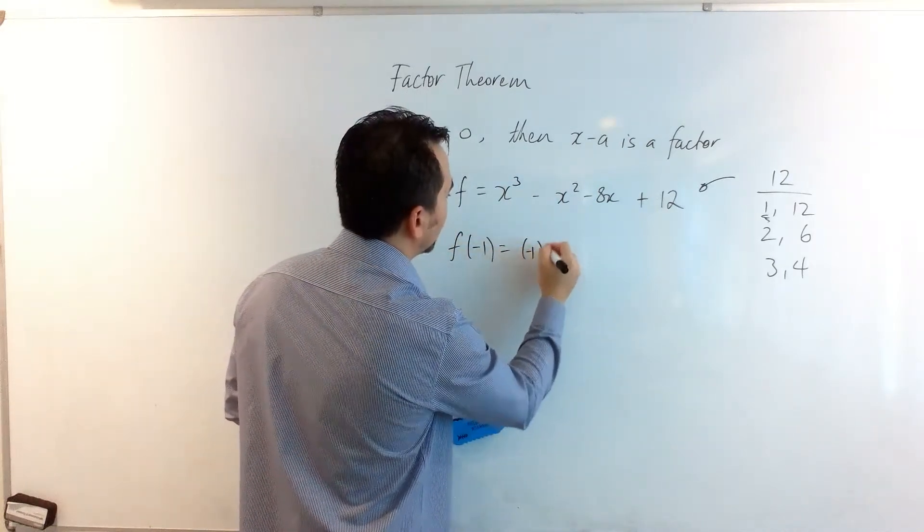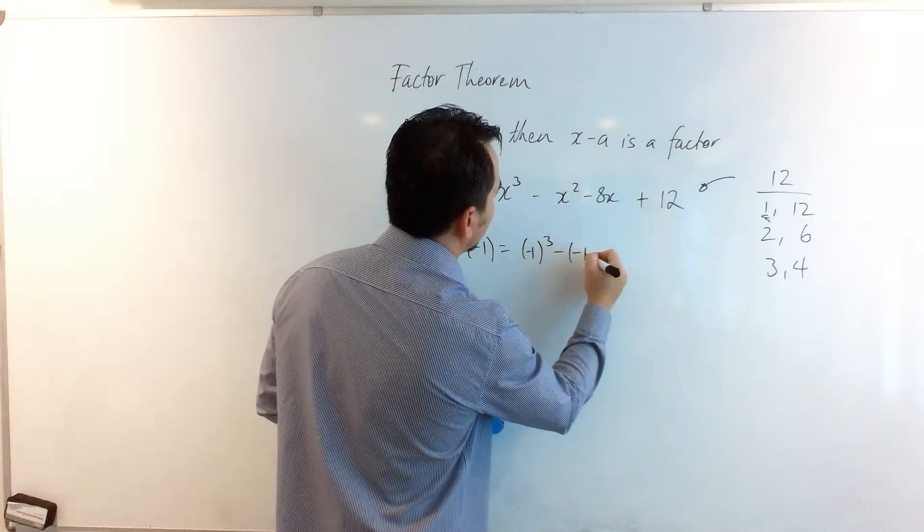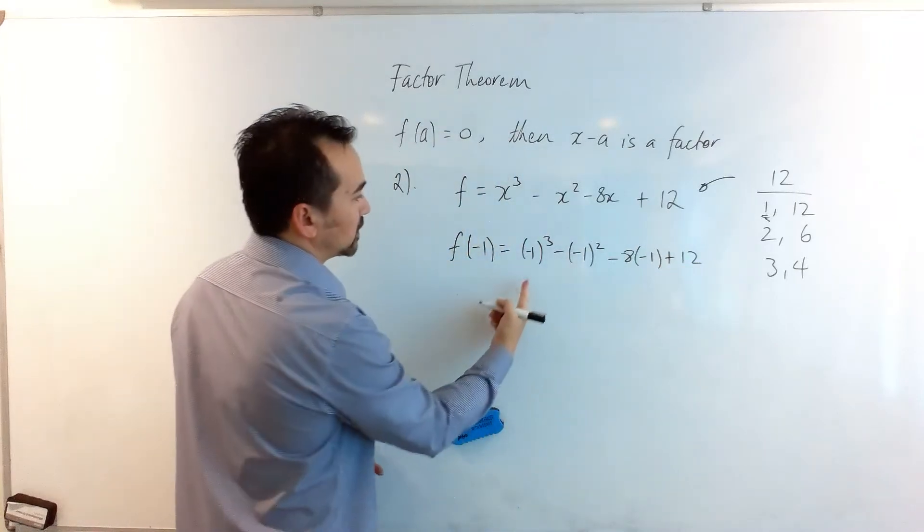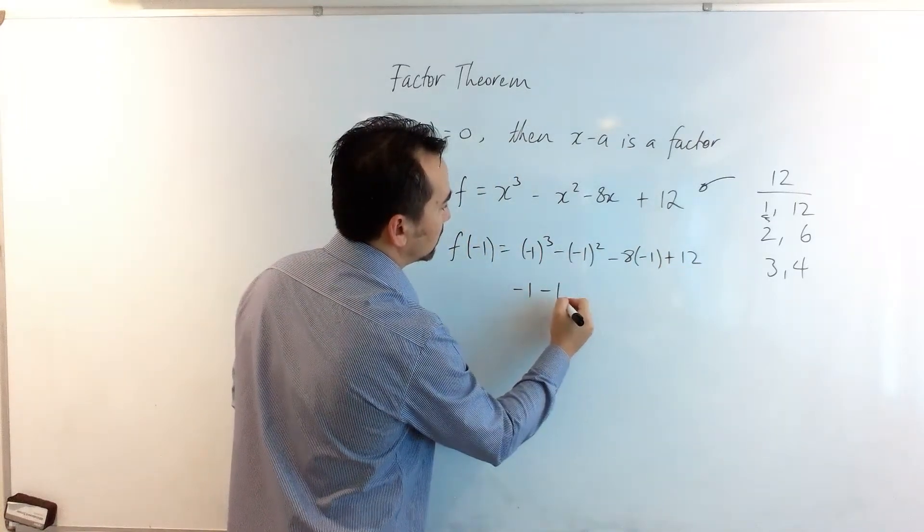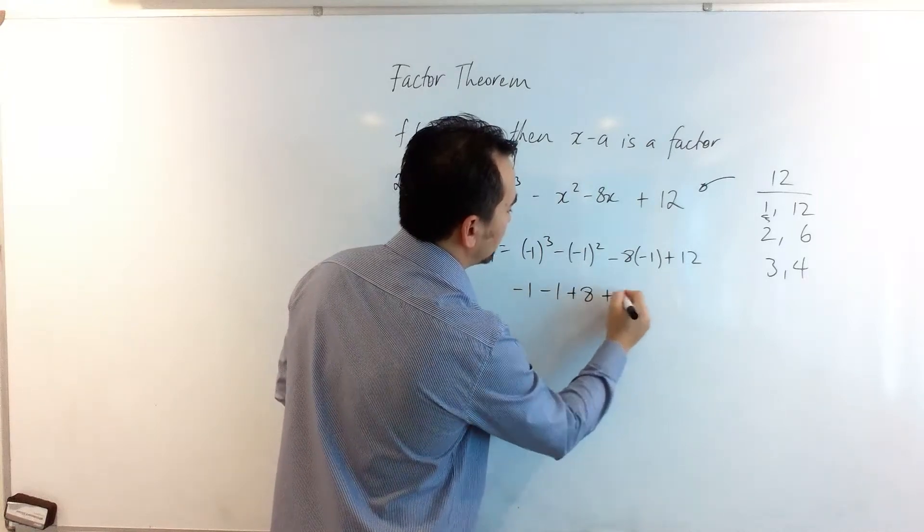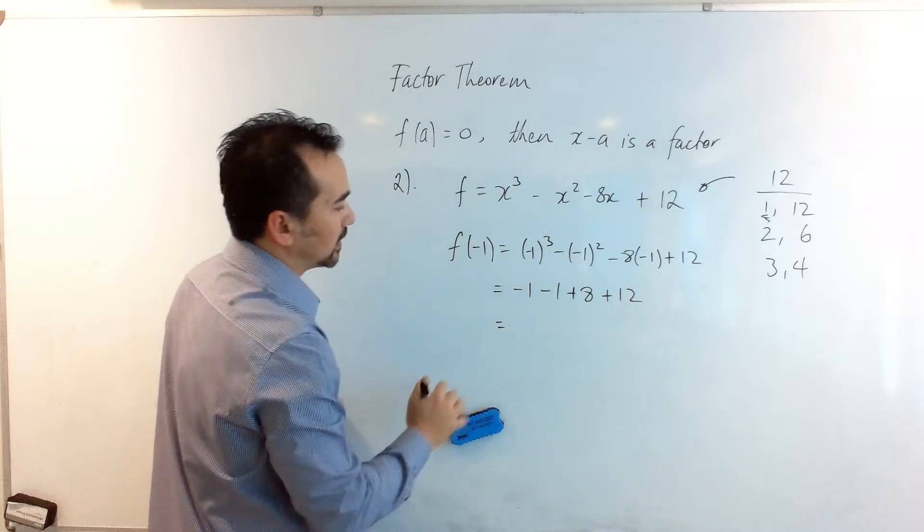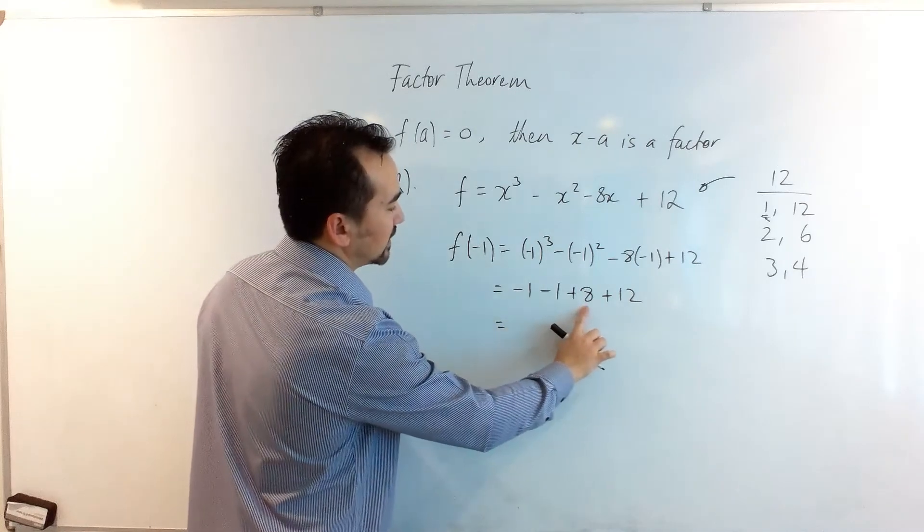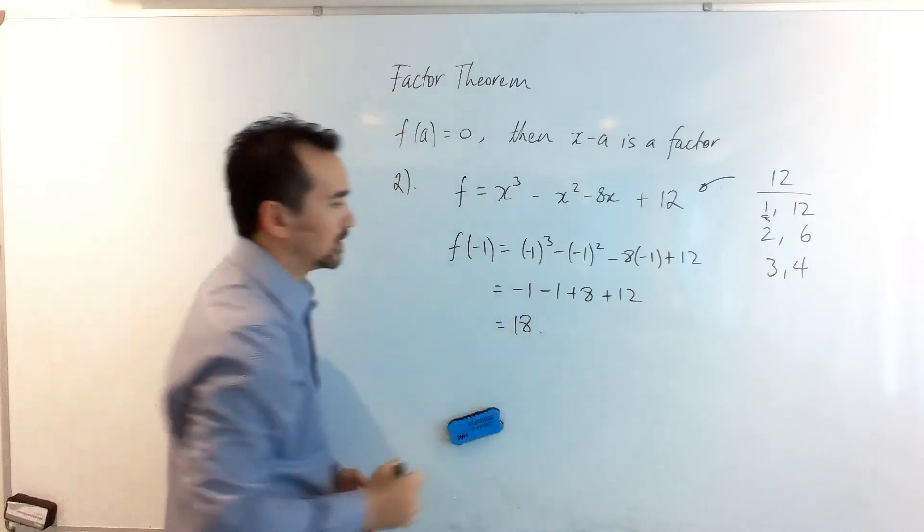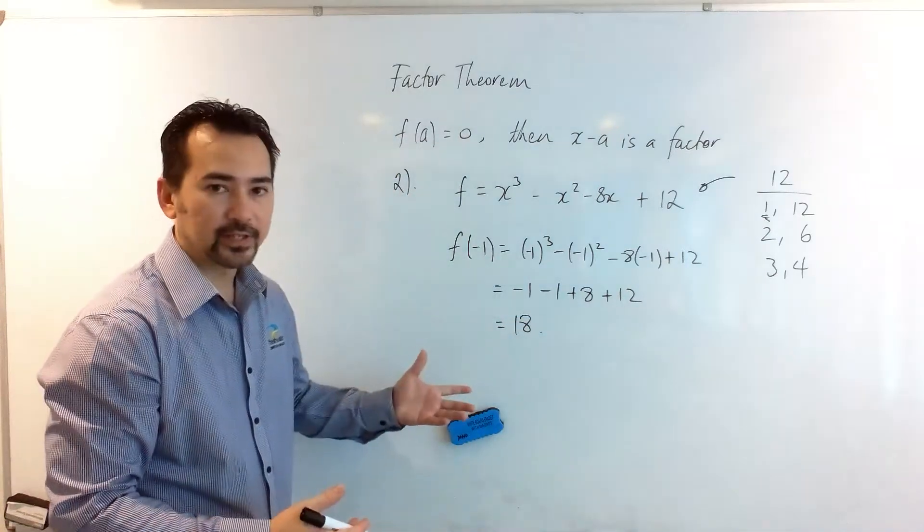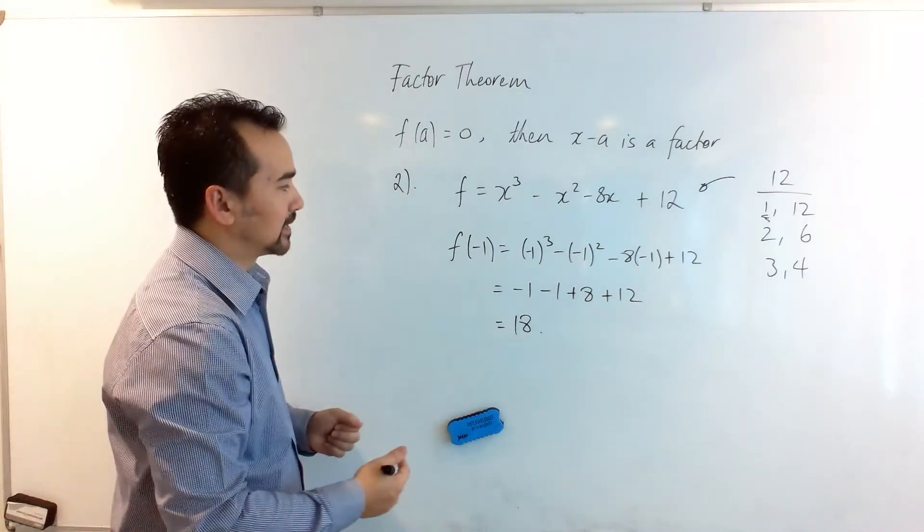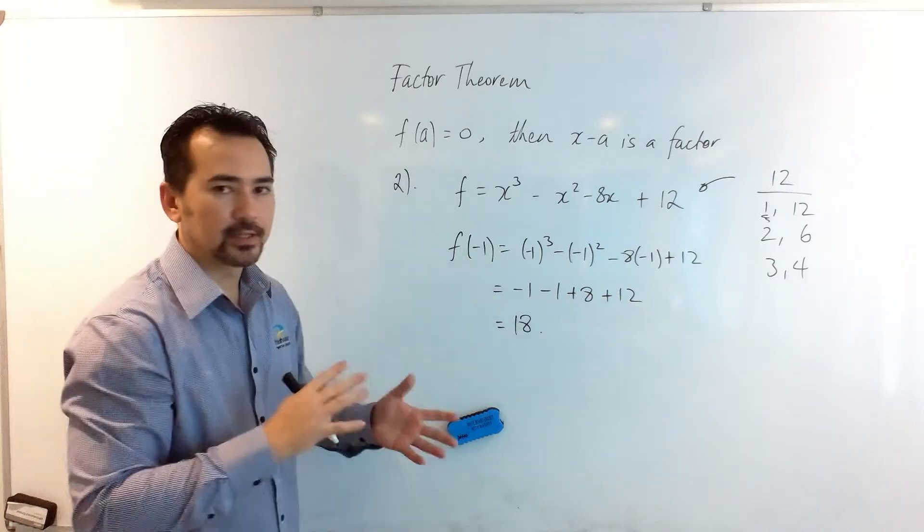And we get (-1)³ - (-1)² - 8(-1) + 12, which comes out to be -1 - 1 + 8 + 12. That's -2 + 8 is 6, 6 + 12 is 18. Oh look, it actually had the reverse effect, the opposite effect. It was overly positive. So perhaps going to negative 1 wasn't the right choice.